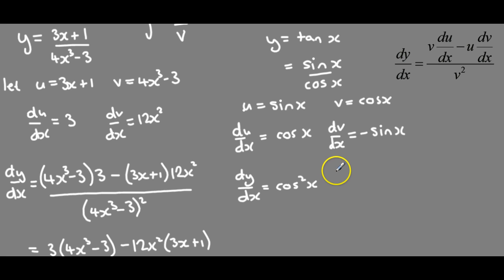minus u times the derivative of v. So that's sin times sin and we're taking away a negative term and that's all divided by v squared.